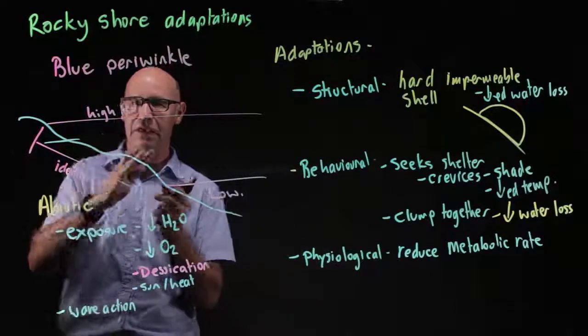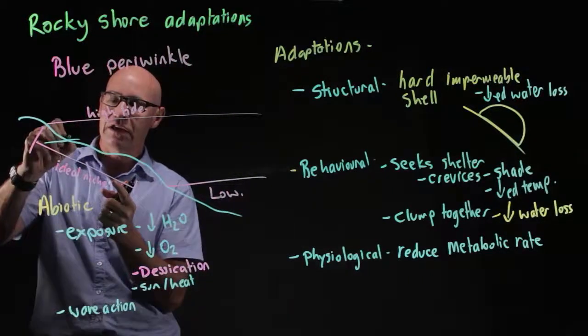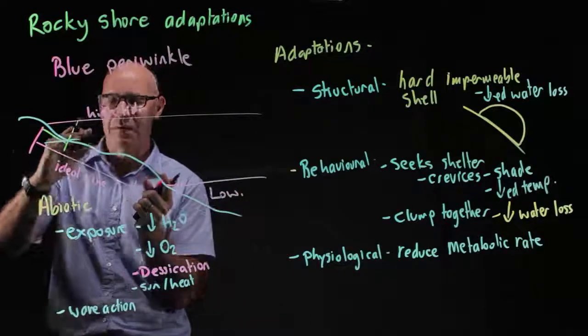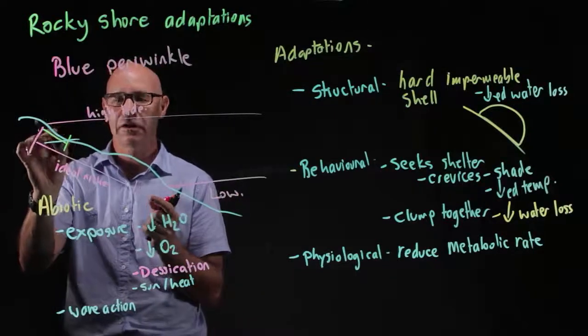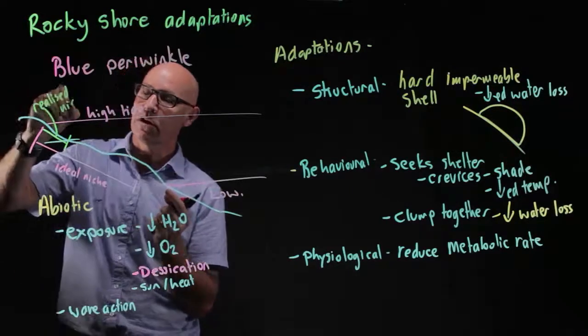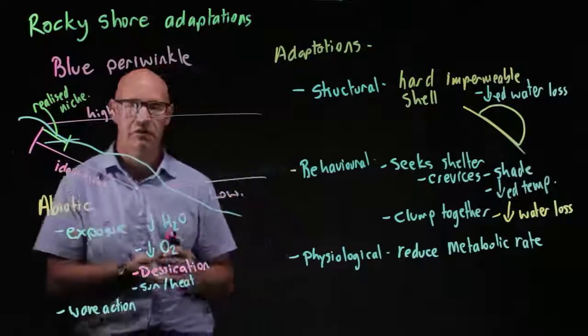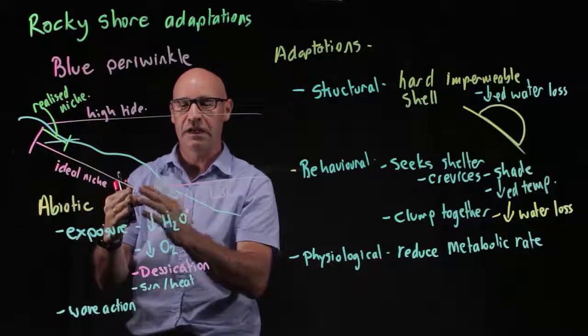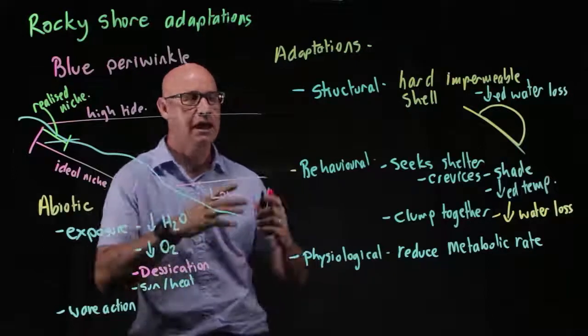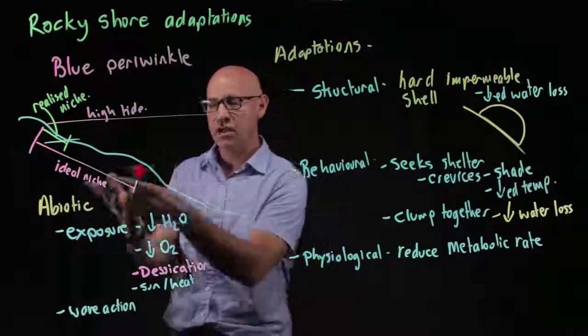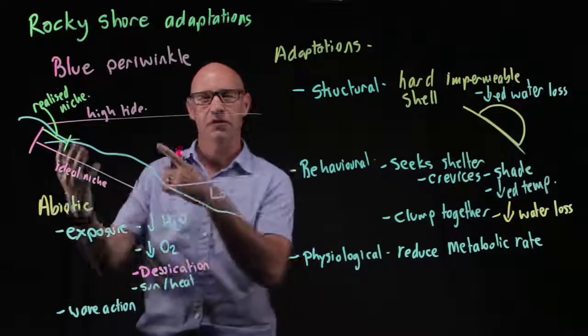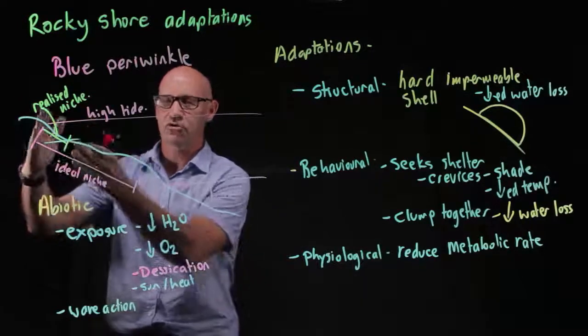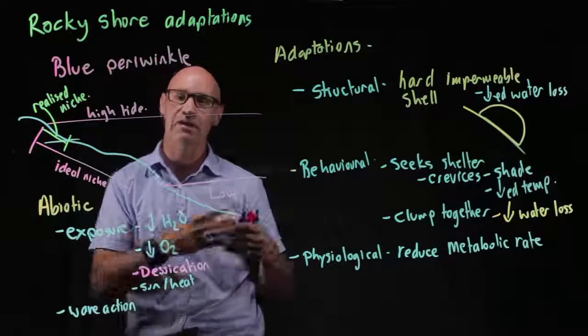What tends to happen is that its actual realized niche is not as big as its ideal niche. It retracts up, so it's most abundant in this higher tide area because there's less competition. The take-home message is that the distribution of a species in an ecosystem is related to two things: its adaptations to the abiotic factors and its interaction with other organisms. In this case, its realized niche has shrunk somewhat because of competition with other species that have a similar niche.